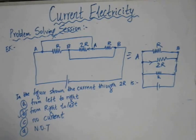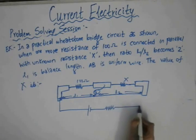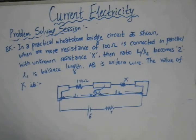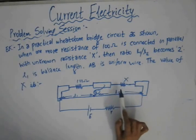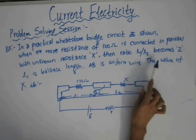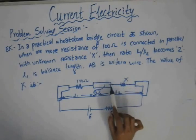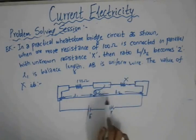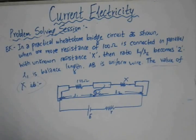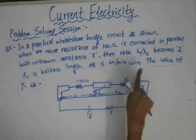Now we solve a problem based on the meter bridge, which is an application of Wheatstone's bridge. In a practical Wheatstone bridge circuit, when a resistance of 100Ω is connected in parallel with the unknown resistance X, the ratio L1/L2 becomes 2. We need to determine the value of the unknown resistance X.